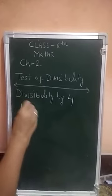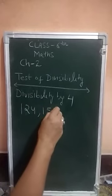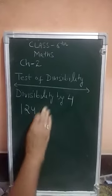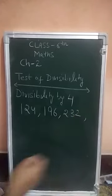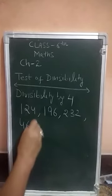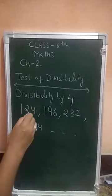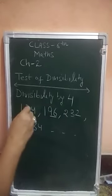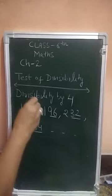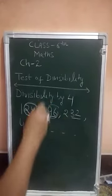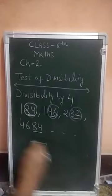Let's take numbers like 124, 196, 232, and 4684. To check whether these numbers are divisible by 4, you check the last 2 digits — the 1's place and 10's place together. If those last 2 digits together are divisible by 4, then the whole number is divisible by 4. For 124, the last 2 digits are 24, and 24 is divisible by 4.